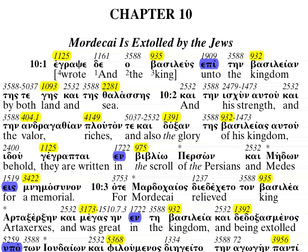Ana is associated only with the accusative and it means up. And Pro is associated with the genitive and it means before. When we get to these, I'll point them out and we'll go over them a little, maybe in the next book, which will be Hosea.